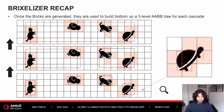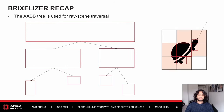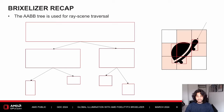Once bricks have been created, we build a 3-level AABB tree for each cascade. This AABB tree is used for ray-scene traversal. We start at the tree level and find the leaf node that the ray intersects, at which point we switch to ray marching the distance field until we find an intersection point.